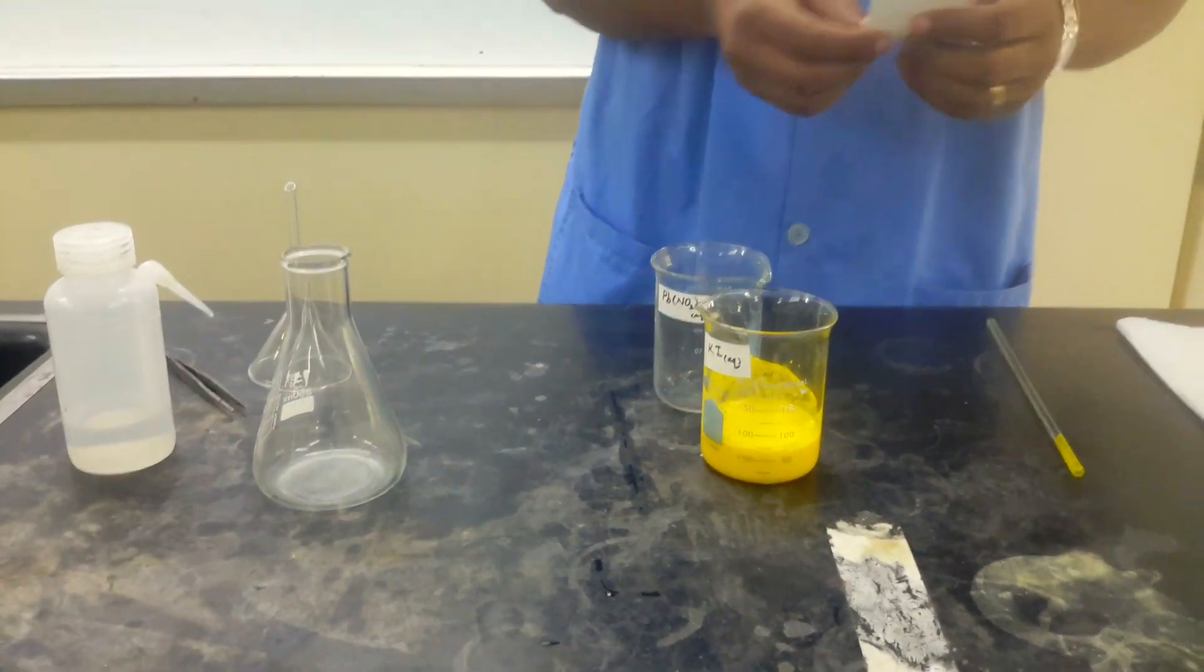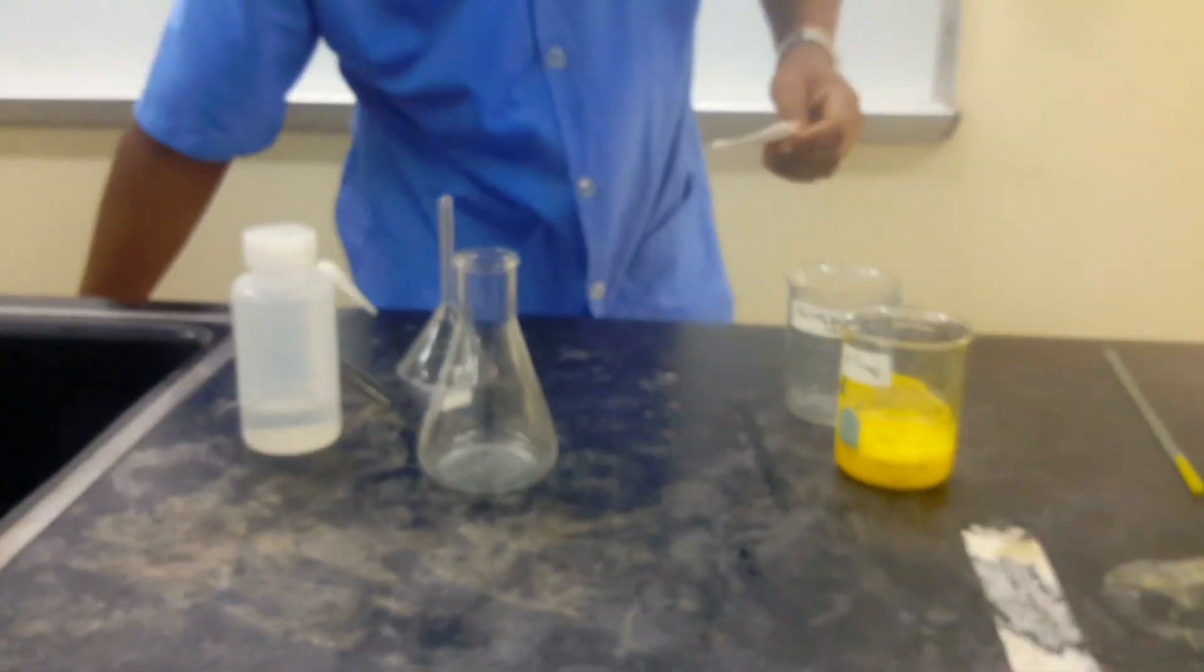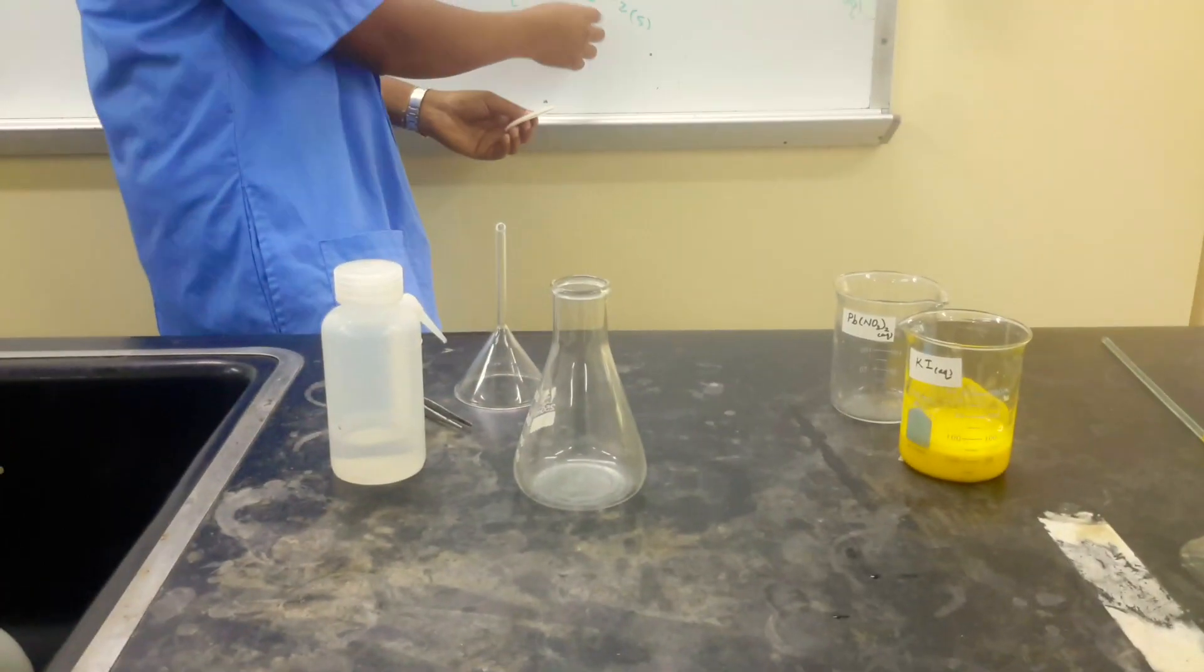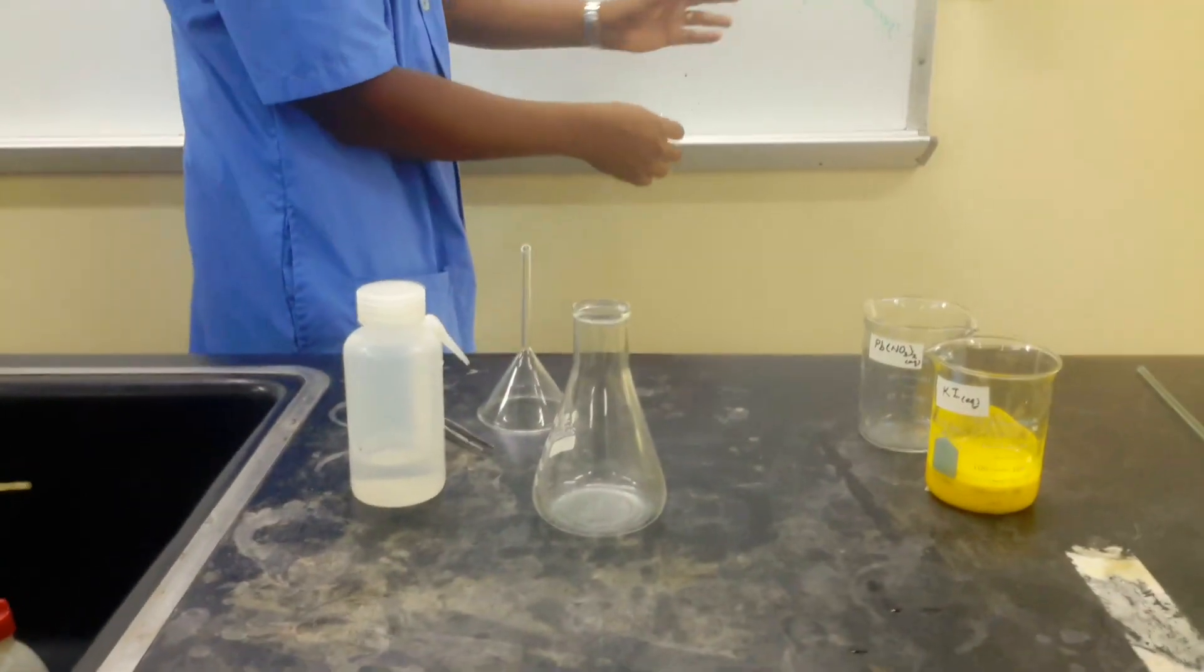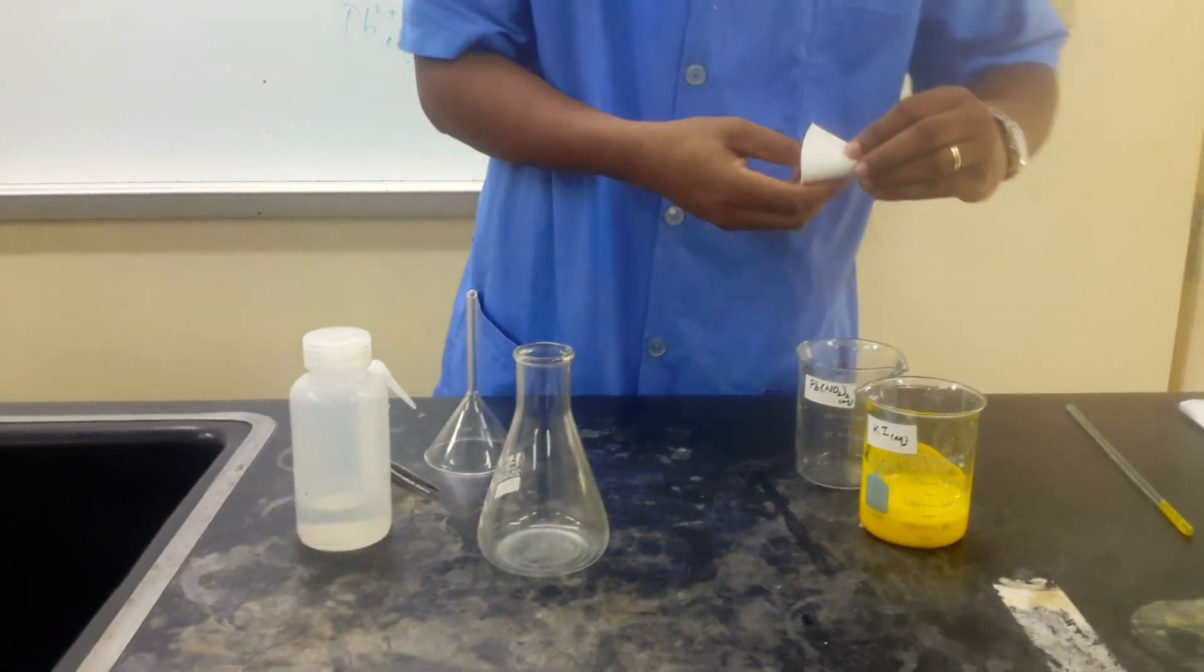So next we'll have to filter. So we'll get our solid, and the solid here would be our lead iodide. And the liquid that will be left would be our potassium nitrate, which we're going to have to filter.